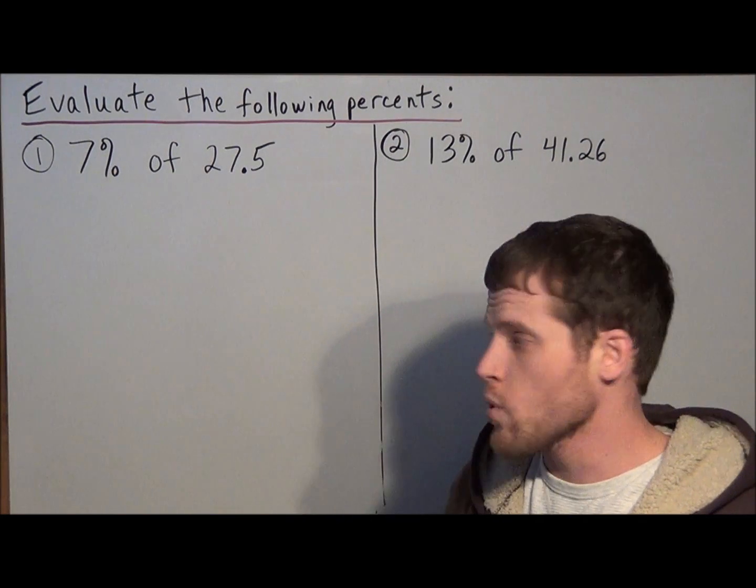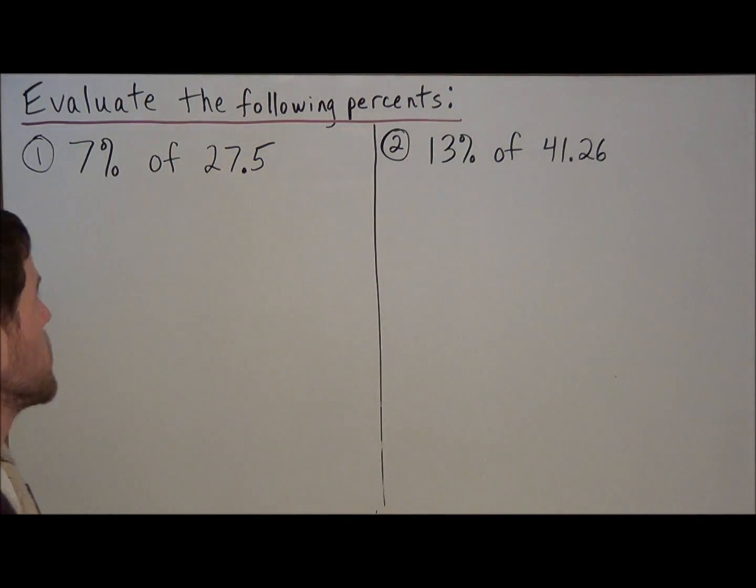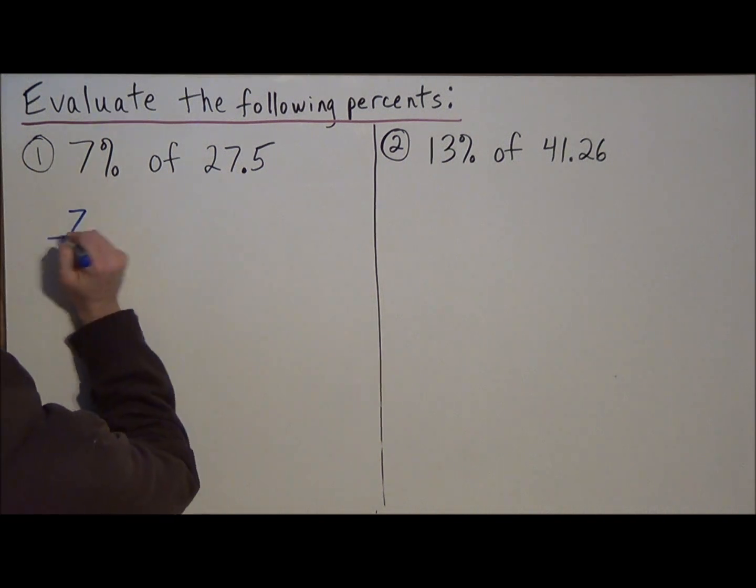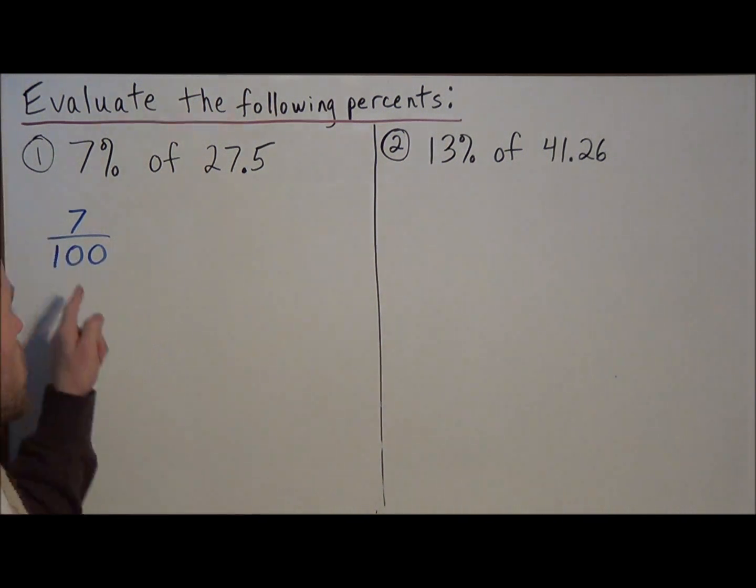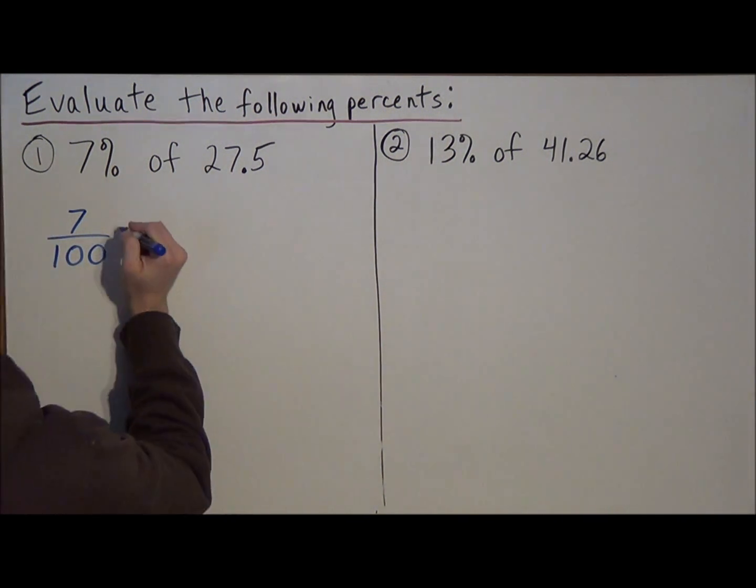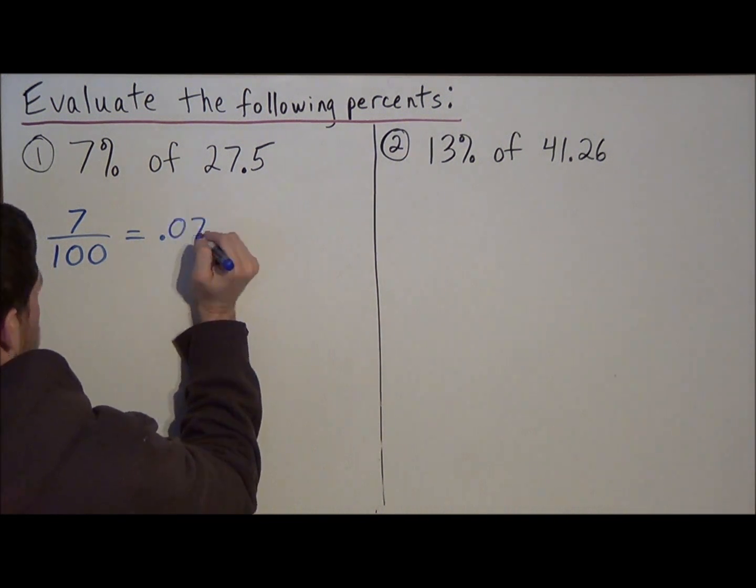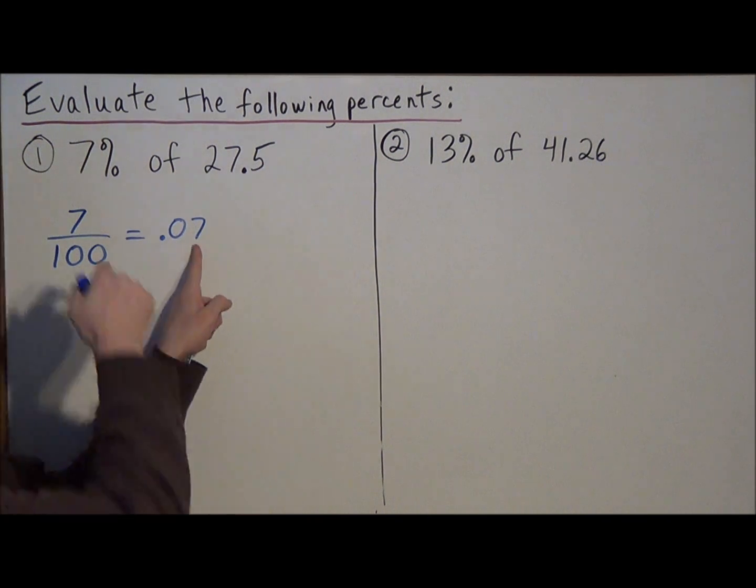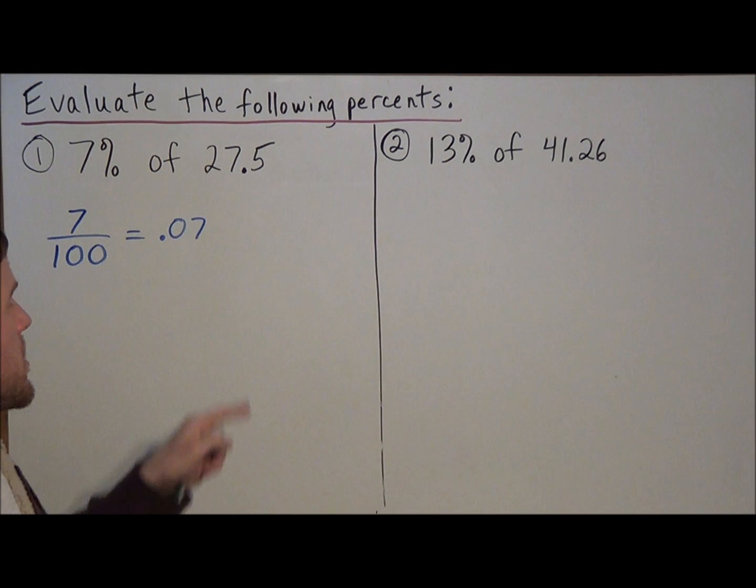For the first example, we need to convert 7% into a decimal. So what we think about is 7% means 7 out of 100. When we turn 7 hundredths into a decimal, we're going to write this as .07. Remember, two spaces after the decimal is hundredths, and we have 7 hundredths. So we're writing 7% as this decimal here.